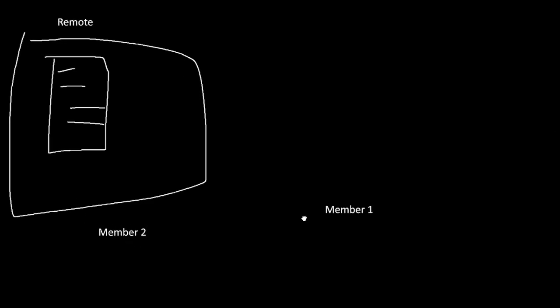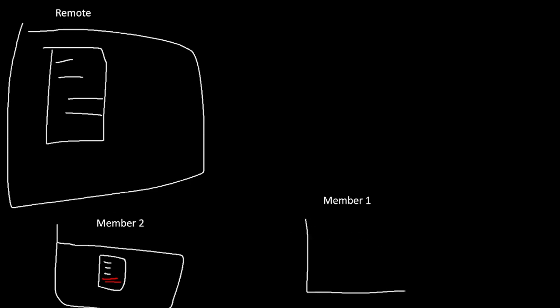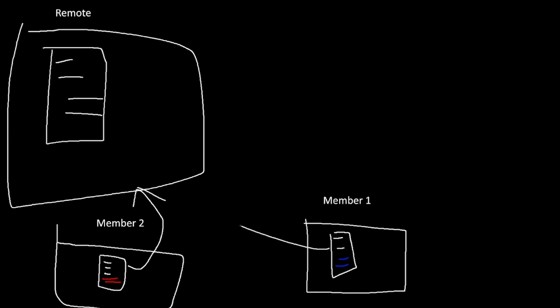Member 1 and member 2 both want access to this, but say member 1 has a copy of it and they add some changes. And then you have member 2 who makes a copy of it and they add their own changes at the same time. What are you gonna do? They both want to put their changes here on the remote.